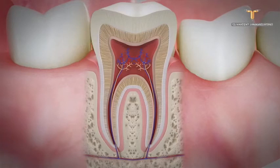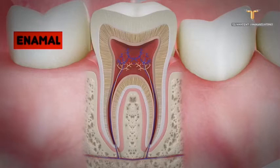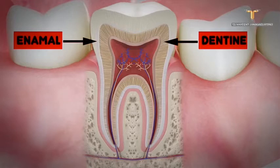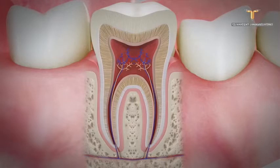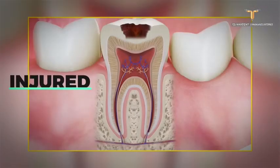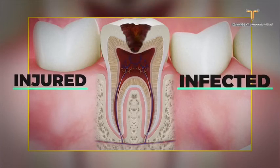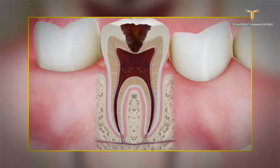Let us understand the basic tooth structure. A healthy tooth has an outer protective layer called the white enamel — the hardest part of our body, even harder than bone. Below the enamel is dentine, which forms the bulk of the tooth. Below the dentine is the soft living part called the pulp, which contains blood vessels and nerves. The pulp extends from the crown of the tooth to the root.